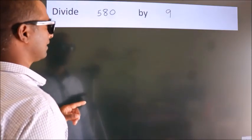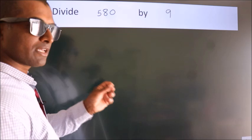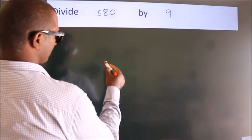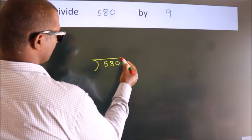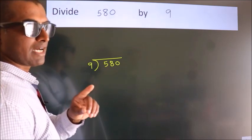Divide 580 by 9. To do this division, we should frame it in this way. 580 here, 9 here. This is your step 1.